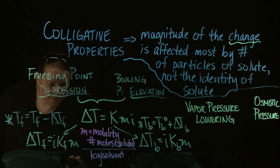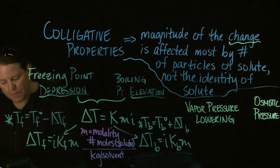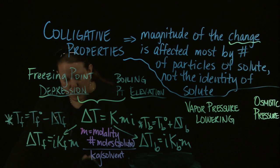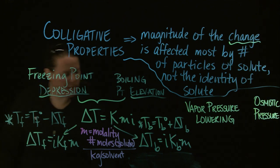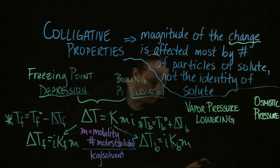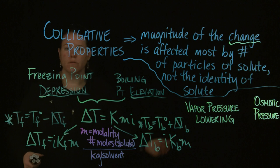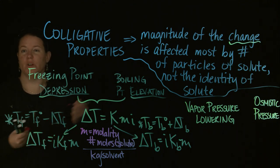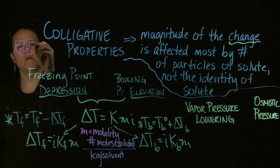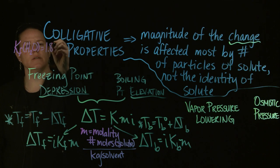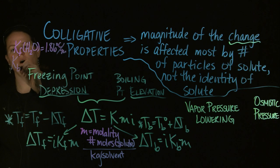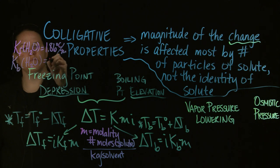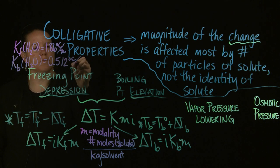Capital K is a constant based off of whatever the solvent is. It changes for whether you're talking about the freezing point or the boiling point. Since many solutions use water as the solvent — one of the reasons it's called the universal solvent — our K values are well established. KF for water is 1.86 °C per molal.